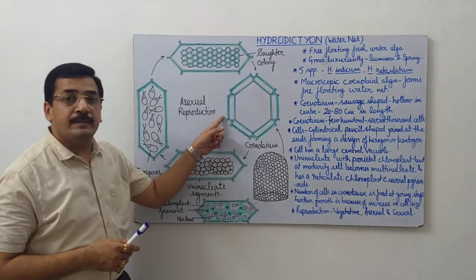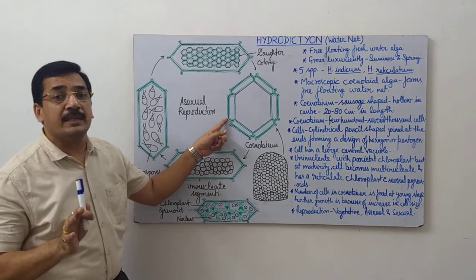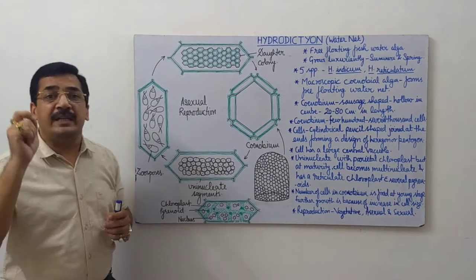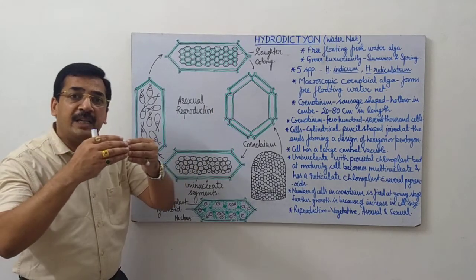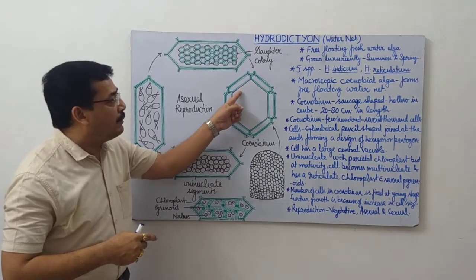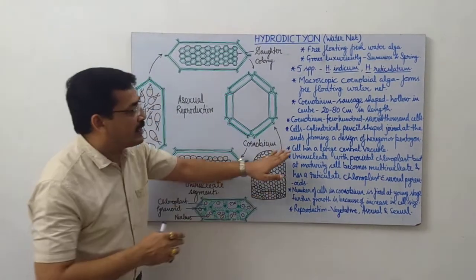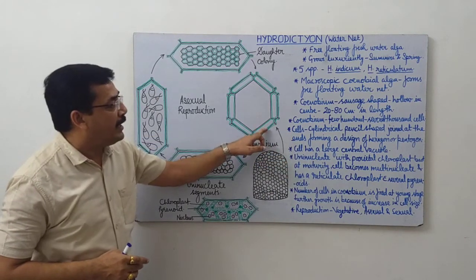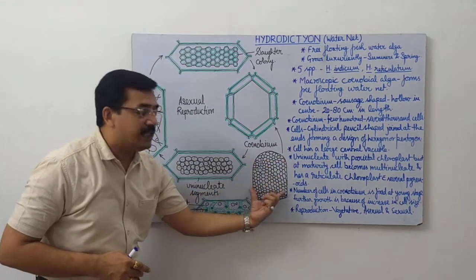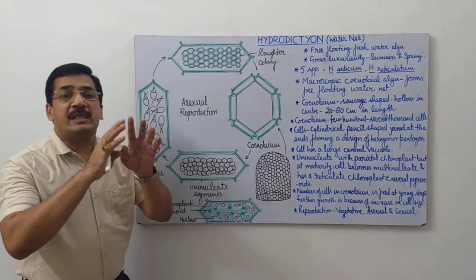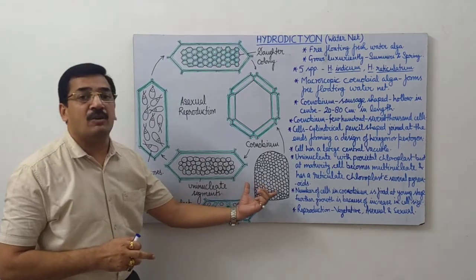The cells are cylindrical, pencil shaped, and when the cells are young, these are uninucleate. The important and interesting point is that these individual cells are connected by their ends to one another and form a characteristic hexagon or pentagon pattern in this net. Cells are joined end to end to form a design of pentagon or hexagon. Whenever you see this colony or coenobium, you will see the cells in hexagonal or pentagonal pattern forming a net. That is why it is called water net.